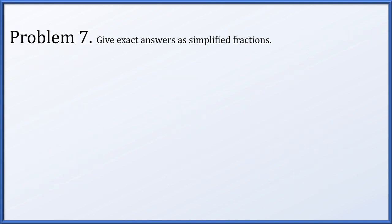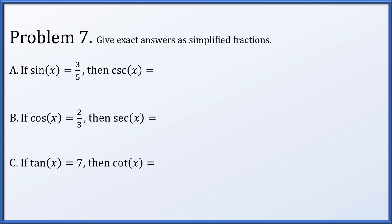In problem 7, we'll give exact answers as simplified fractions. Cosecant is the reciprocal of sine, so if sin x = 3/5, then csc x = 5/3. Secant is the reciprocal of cosine, so if cos x = 2/3, then sec x = 3/2. And cotangent is the reciprocal of tangent, so if tan x = 7, then cot x = 1/7.